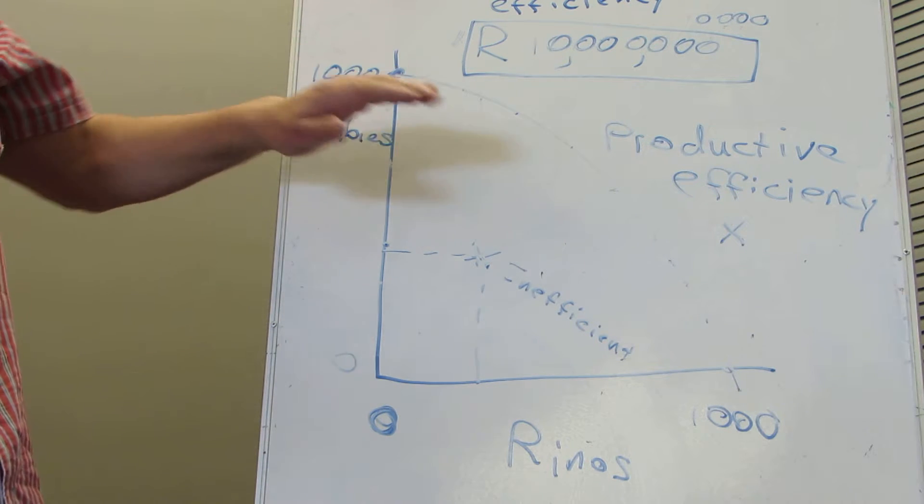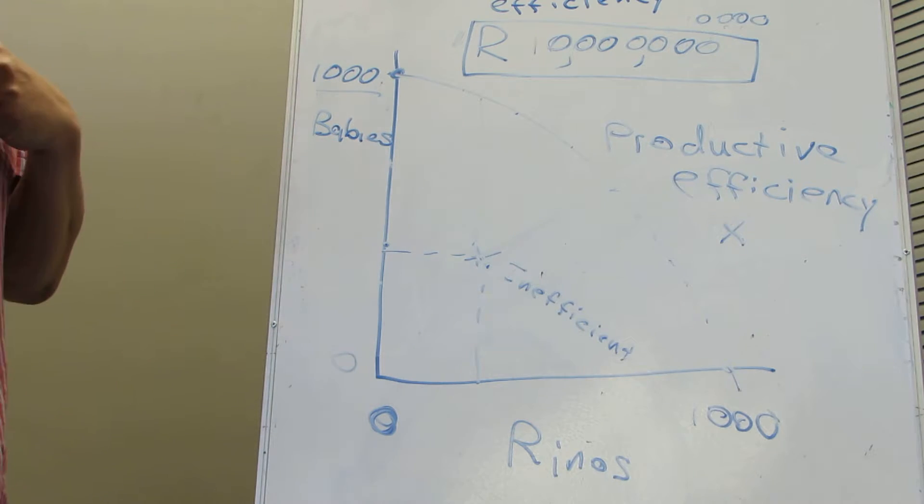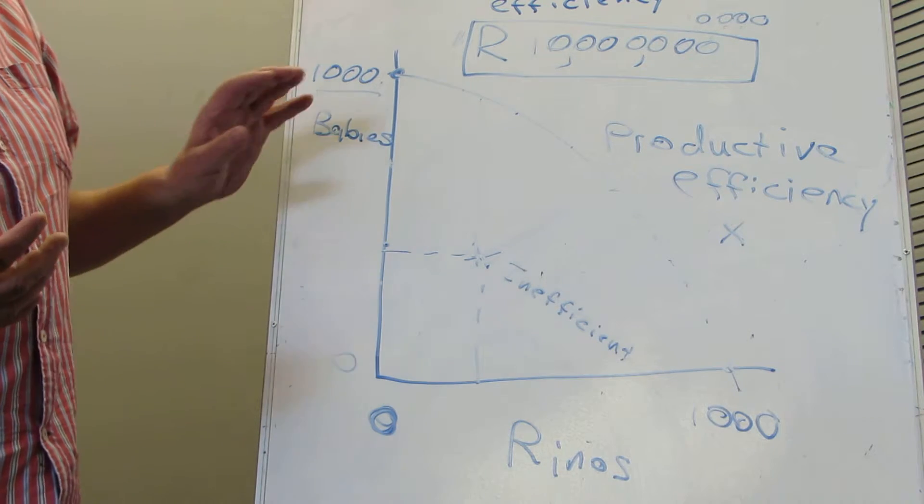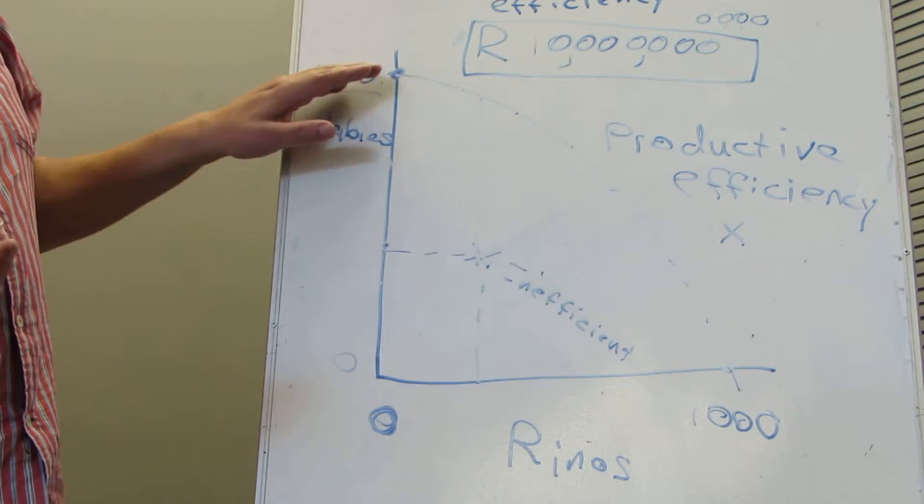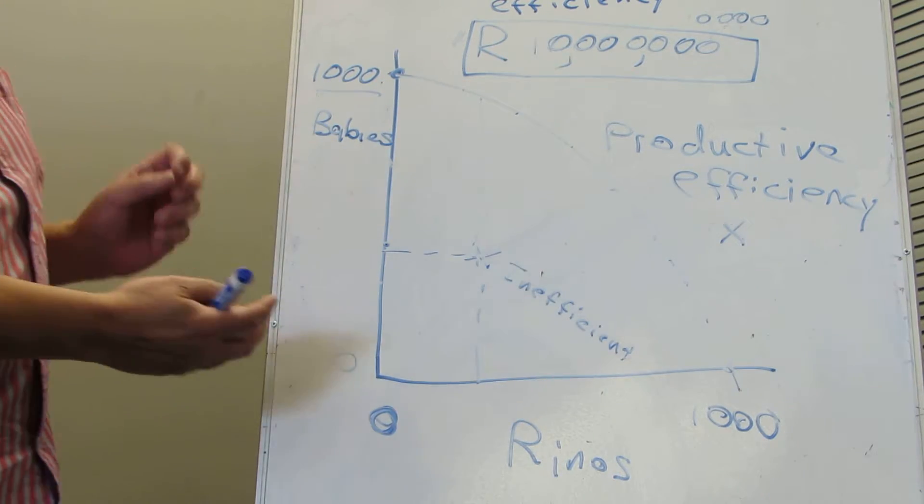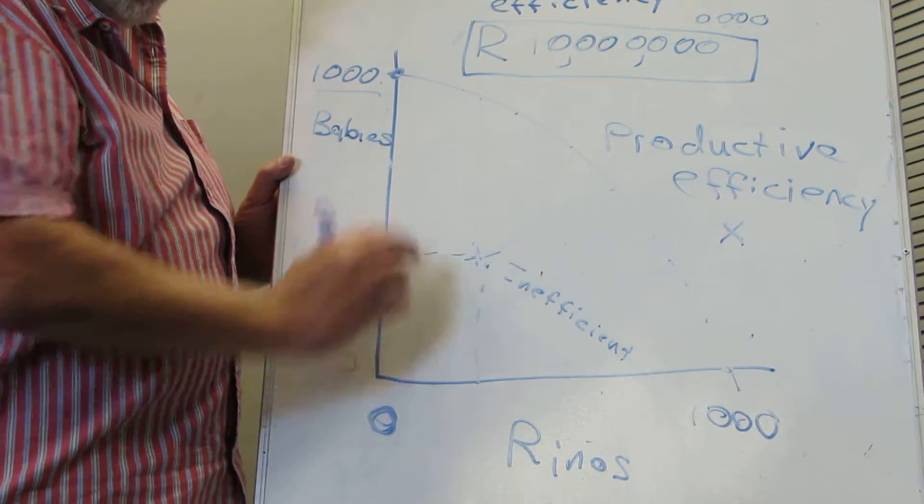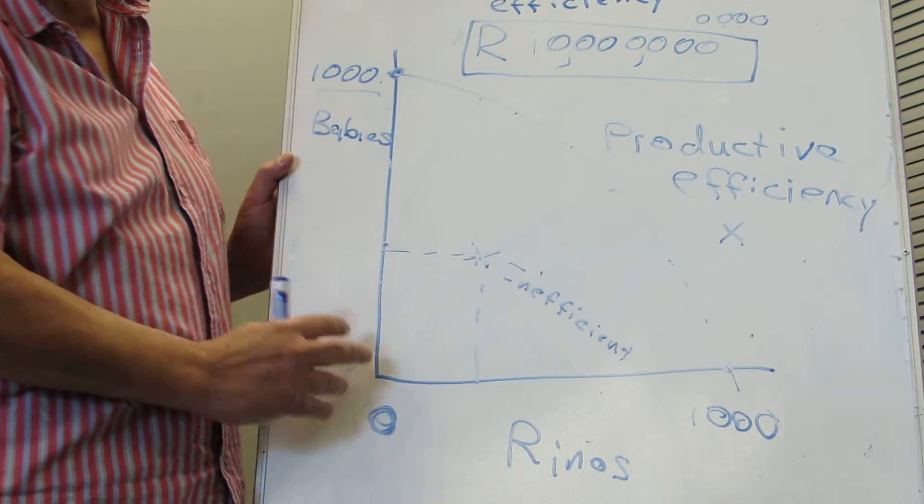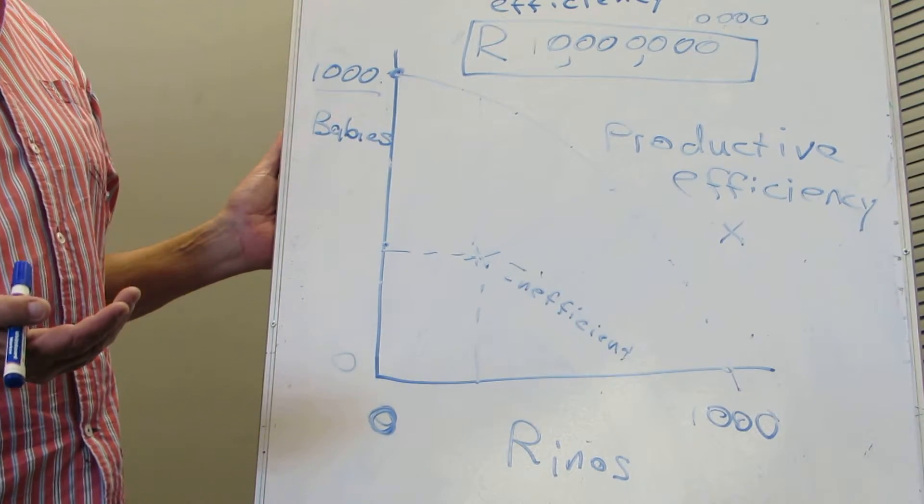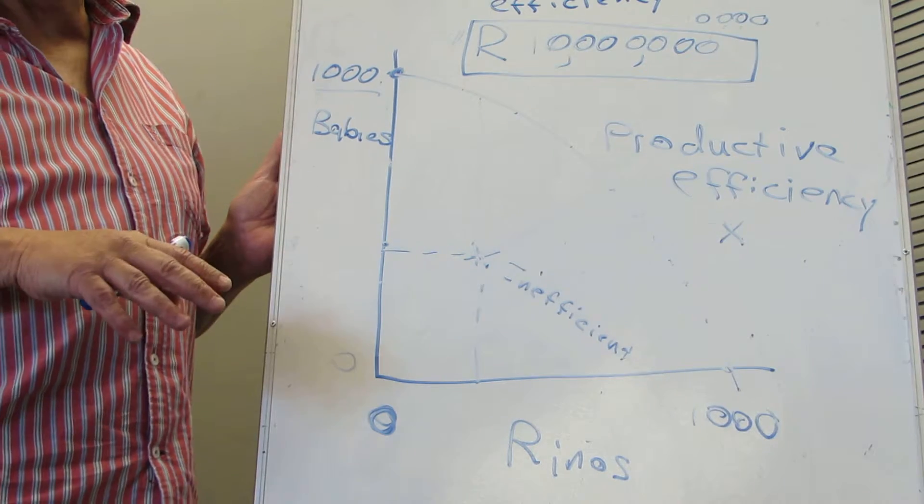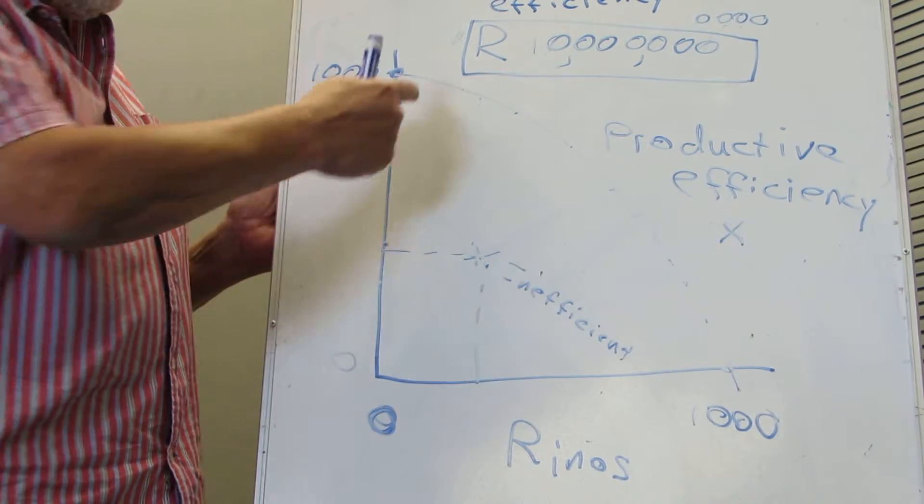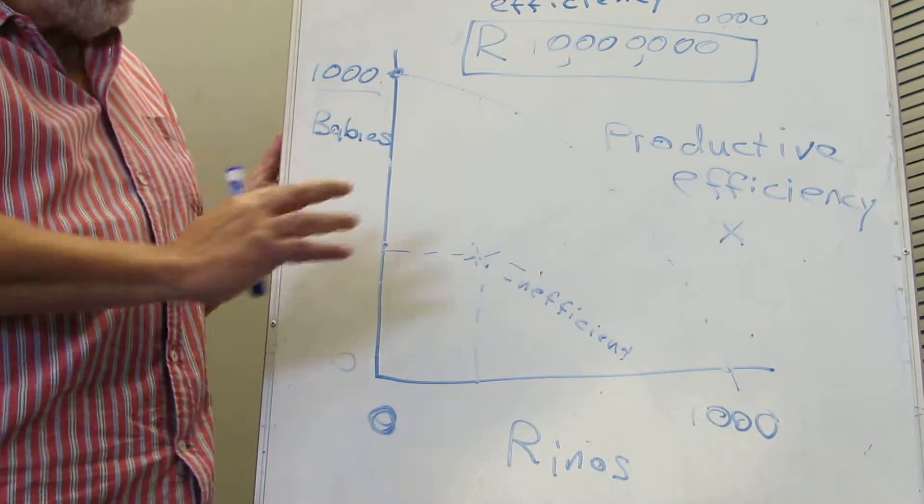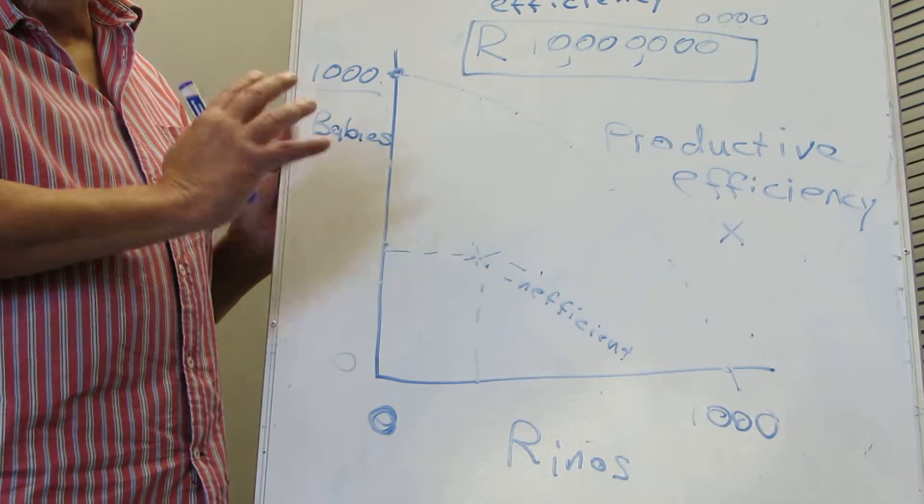Now, the shape of this curve depends on the circumstances. Normally it's concave. It's hollow from the source. Can you see it's hollow from the source? You call that concave. What is the opposite of concave? Convex. So you're going like that. But this is the normal shape of your PPF.